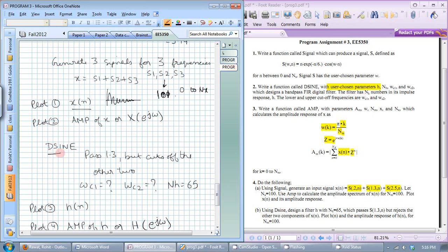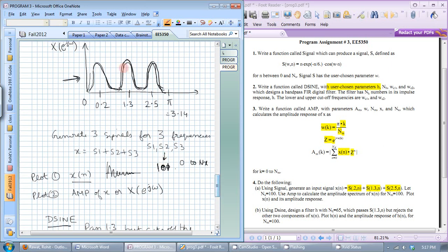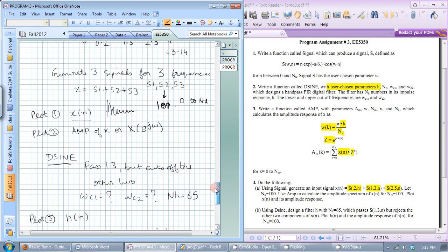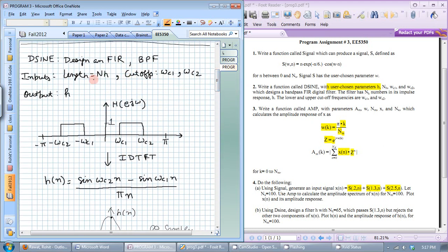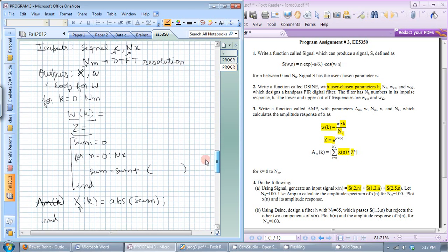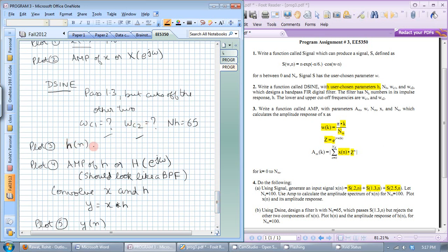Then the next part is to call the function design so that it passes this peak in the center but it blocks out these two. So you basically need to produce a band pass filter that probably looks like that. 0 1 and you have two cutoffs and you can figure out what these cutoffs should be. You figure out the cutoffs and the filter length is given as 65. You will pass the input length as 65 and two cutoffs and it should return a filter edge.